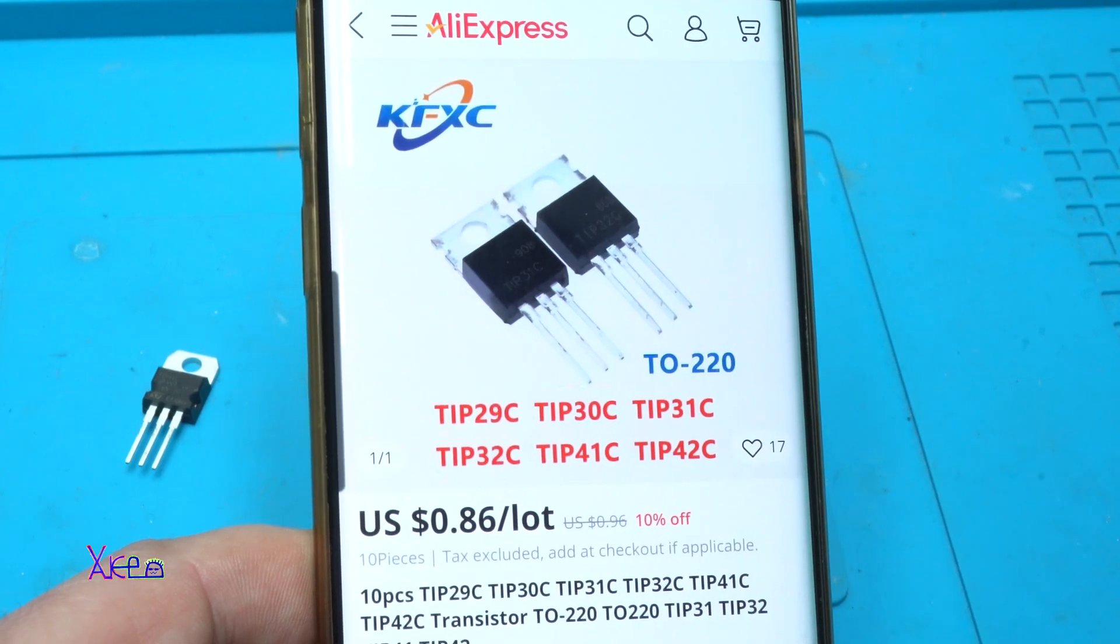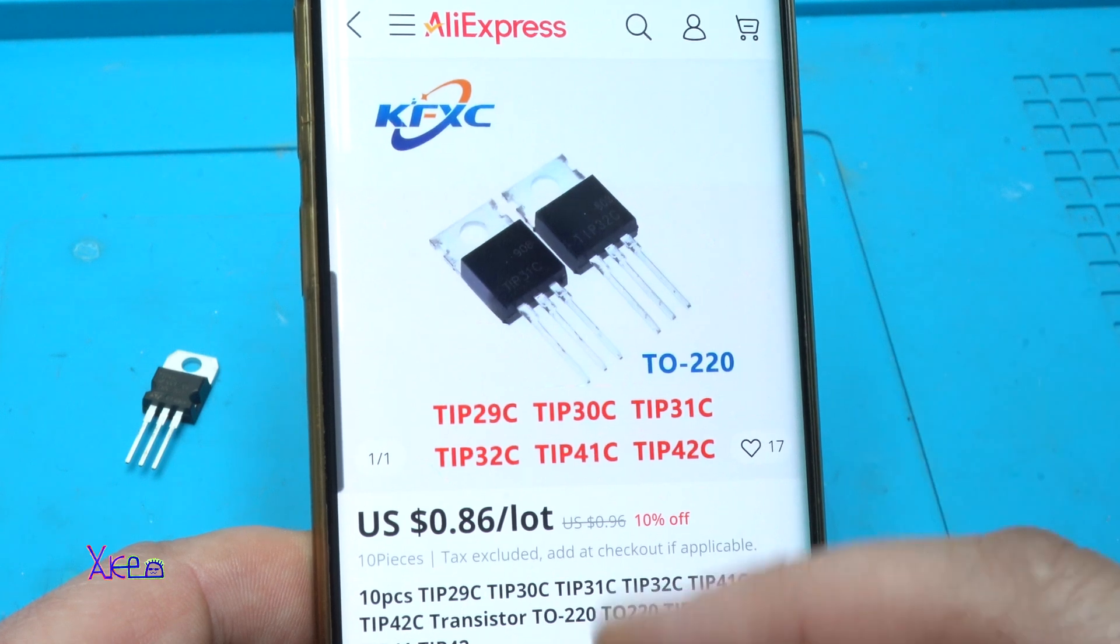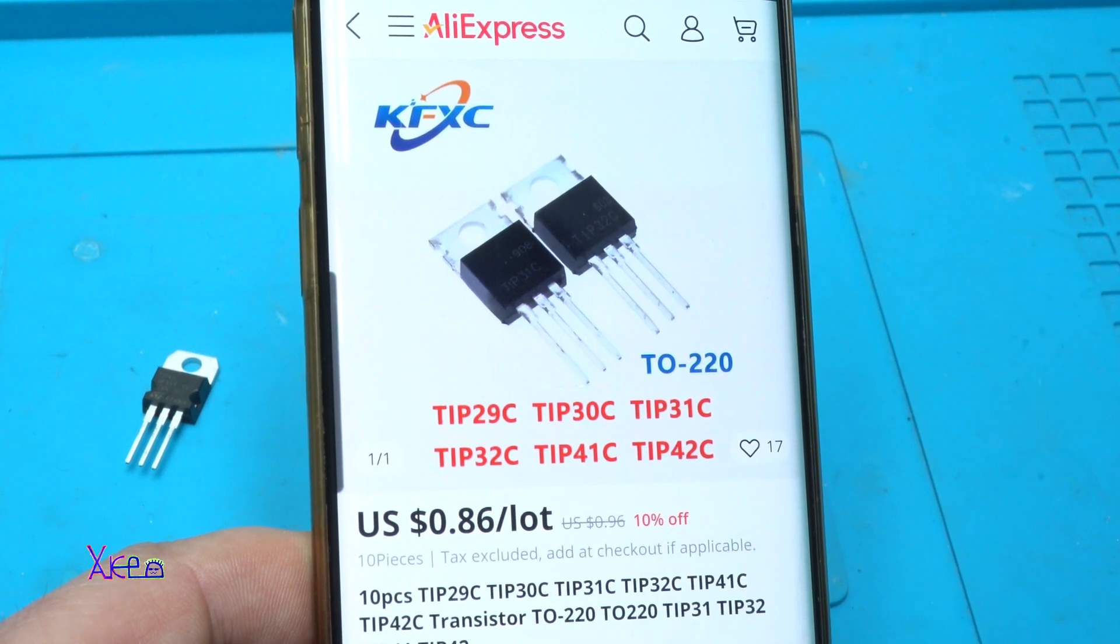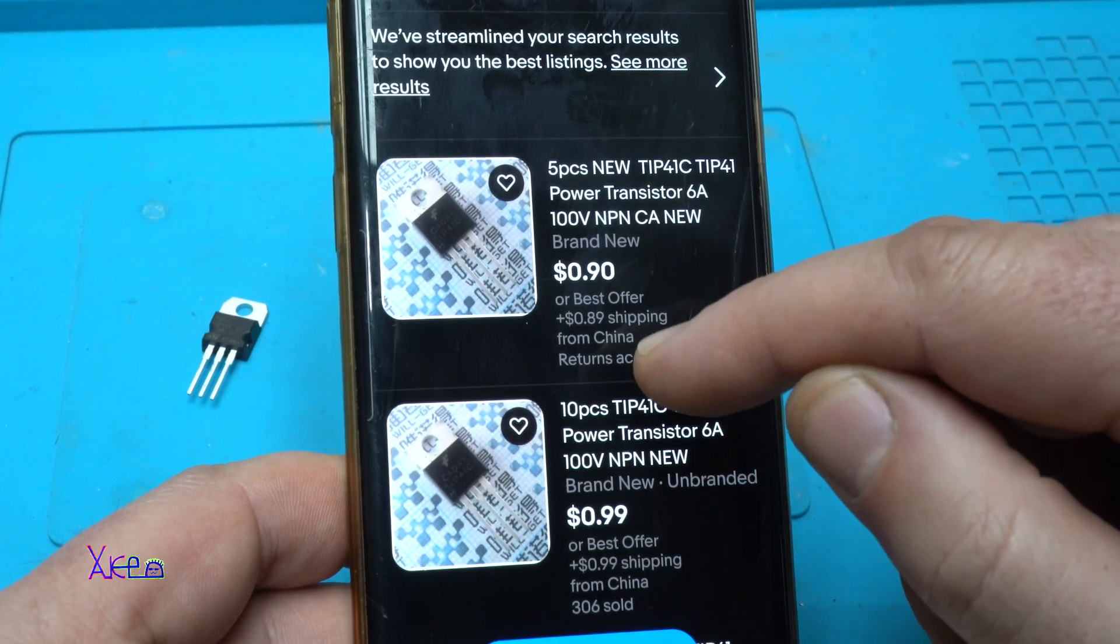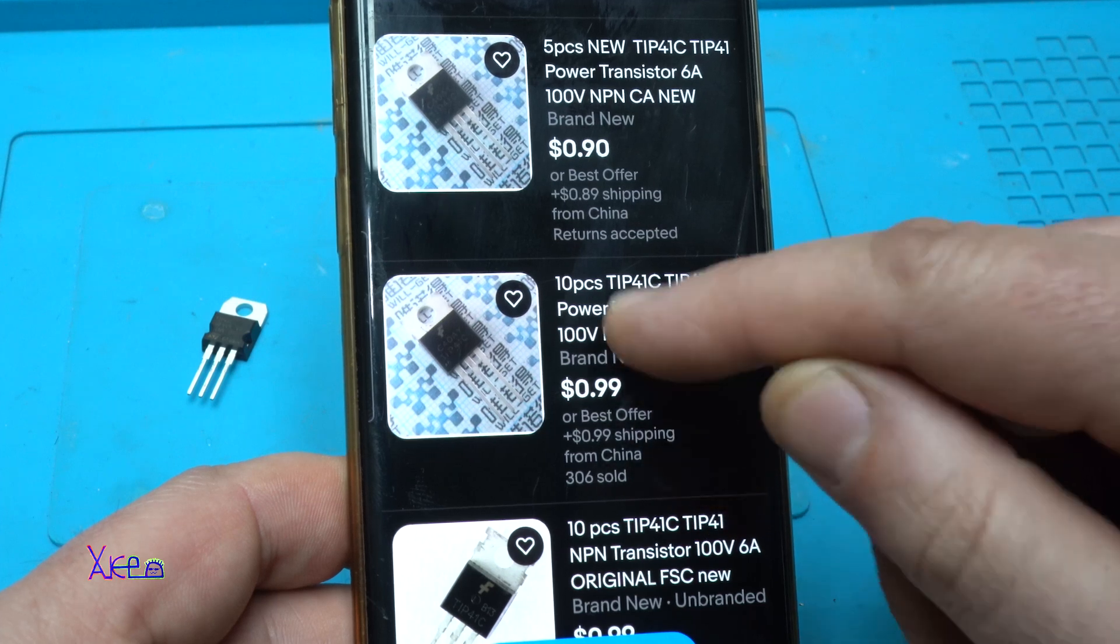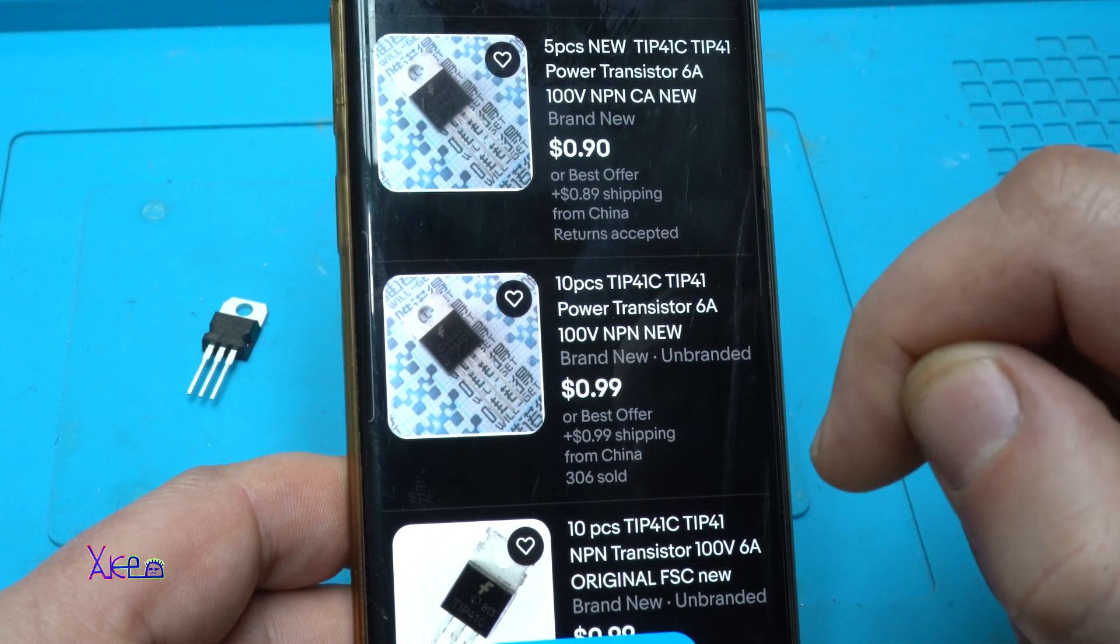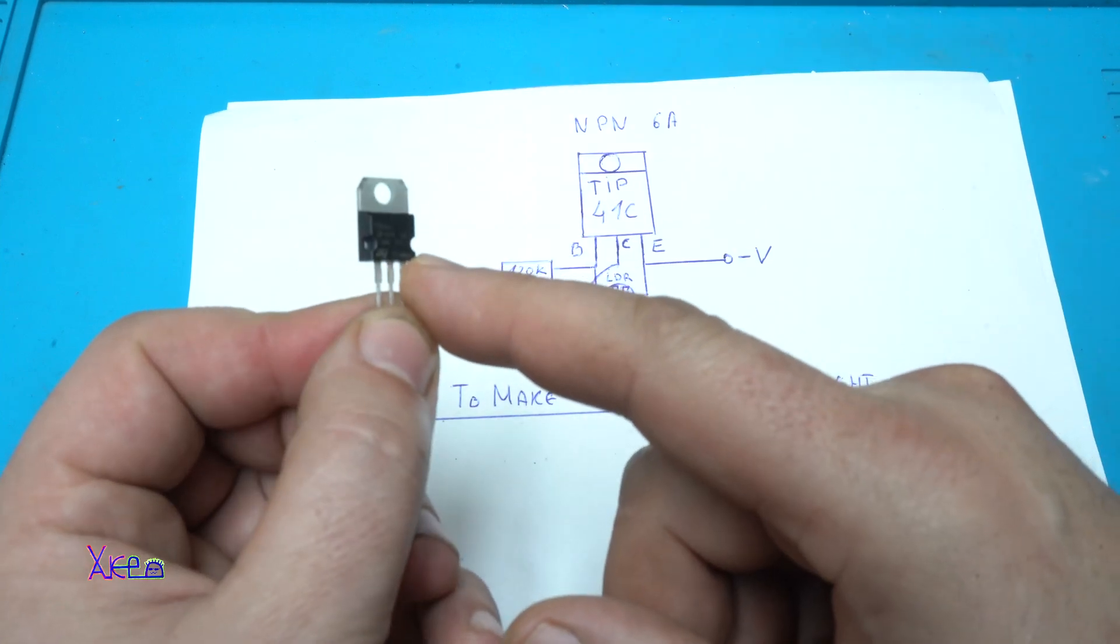You can buy 10 pieces of TIP41C N-PEN transistor from Aliexpress for 86 cents and from eBay for around $1.80 or $2 for 10 pieces. It's very popular and widely used.